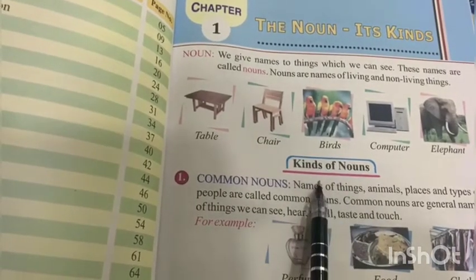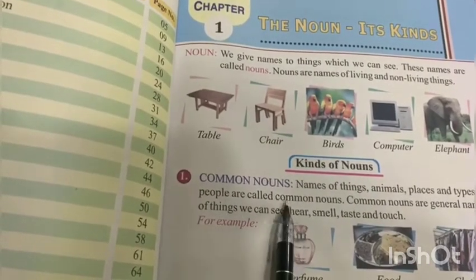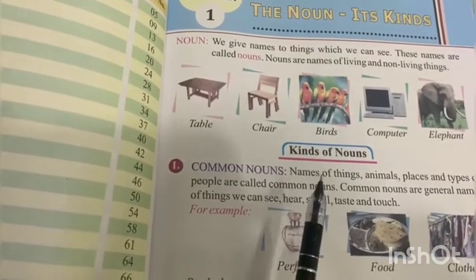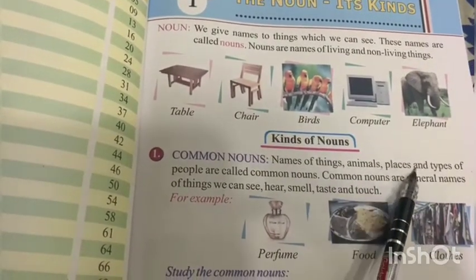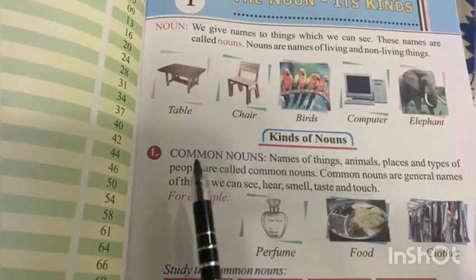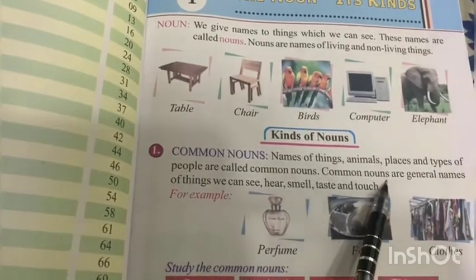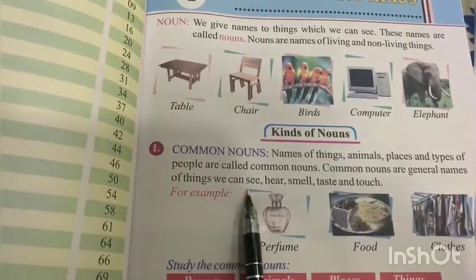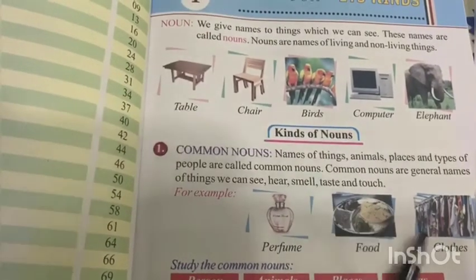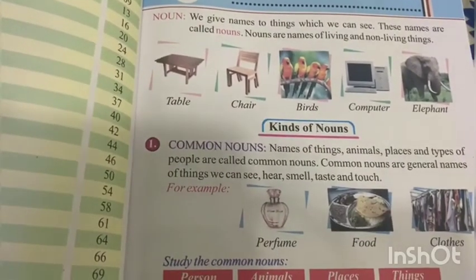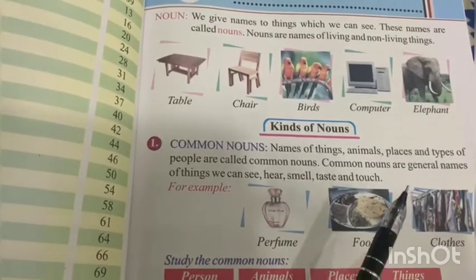In kinds of nouns, the first kind is common nouns. What are common nouns? Names of things, animals, places, and types of people are called common nouns. Common nouns are general names of things we can see, hear, smell, taste, and touch.